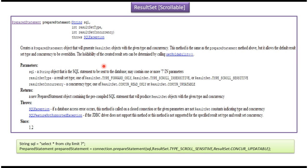If you want to use a PreparedStatement to create a scrollable result set, you can do that as well. The prepareStatement method is available — first you pass the SQL, then you specify the result set type and result set concurrency. This method will return the PreparedStatement, and using it you can create the scrollable result set.